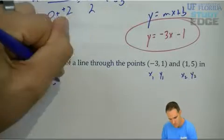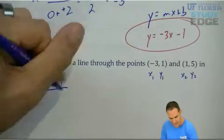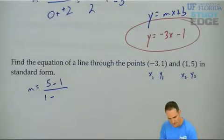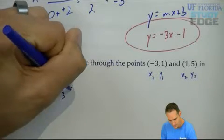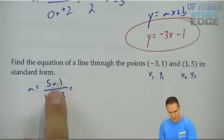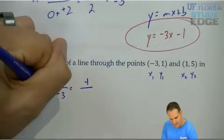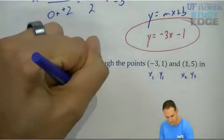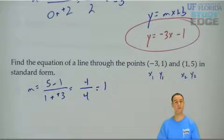y2 minus y1 divided by x2 minus x1. 5 minus 1 is 4. 1 minus negative 3 is 1 plus 3, which is 4. 4 divided by 4 equals 1.